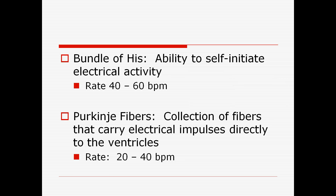The impulse comes down through the AV node to the bundle of His, which starts the ventricular contraction. If there is a block in the AV node, the bundle of His has the ability to self-initiate electrical activity to preserve cardiac function. However, that self-initiated rate is only 40 to 60 beats per minute — some patients at that level might faint or feel dizzy.